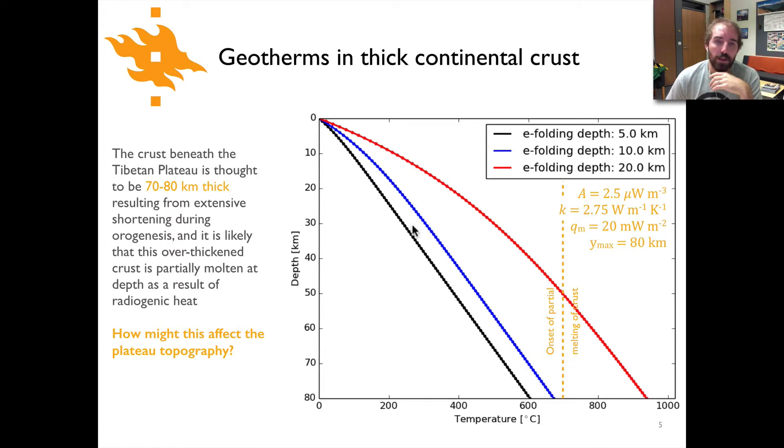What we can see here is that as we get deeper in the models with e-folding depths of five or ten kilometers, we still stay below that onset of partial melting. But for an e-folding depth of 20 kilometers, you can see we cross that line of partial melting at about 50 kilometers depth.